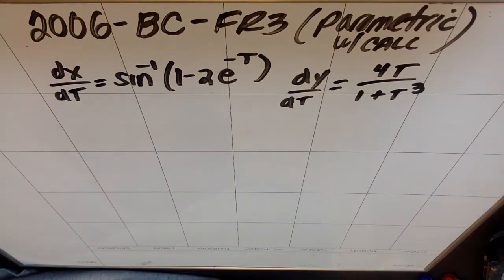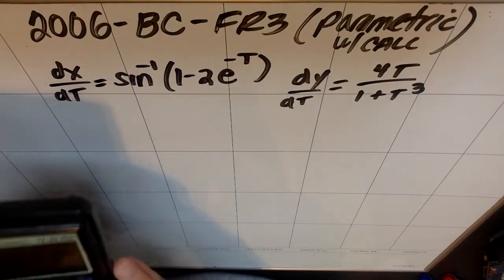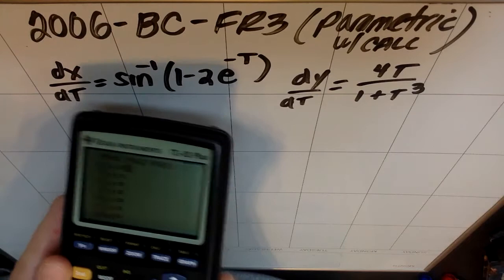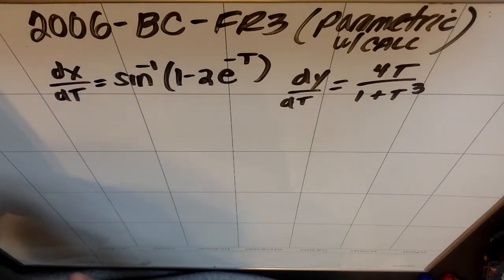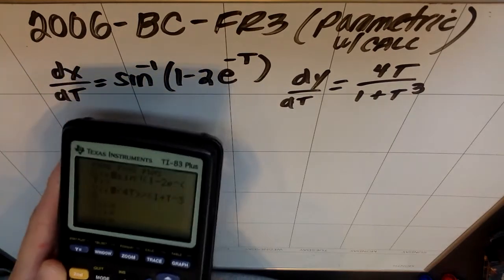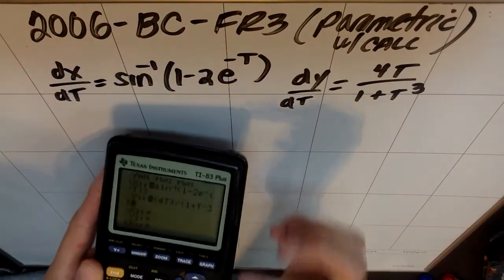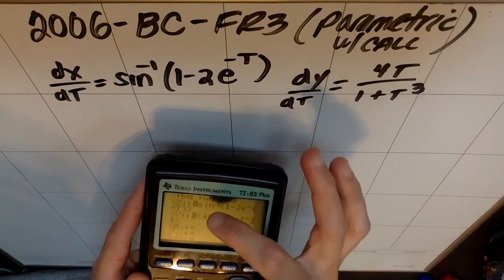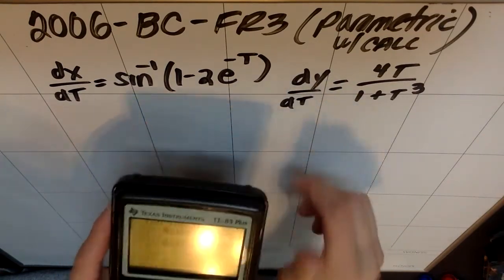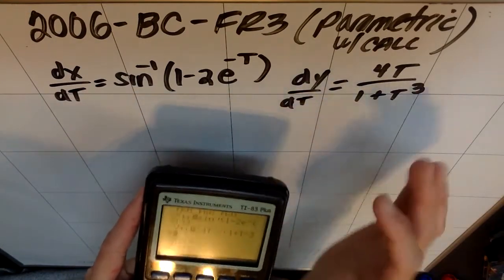Since this is a calculator problem, it's very likely that the first smart thing you can do is enter these things into X1t and Y1t of your calculator. So I'm going to do the inverse sine of 1 minus 2e to the negative t, and then my second one's going to be 4t in parentheses divided by 1 plus t to the third. You always want to enter the parametric pairs so that they match. Don't put like regular X in as your X1t but Y prime as your Y1t. That's a bad idea.